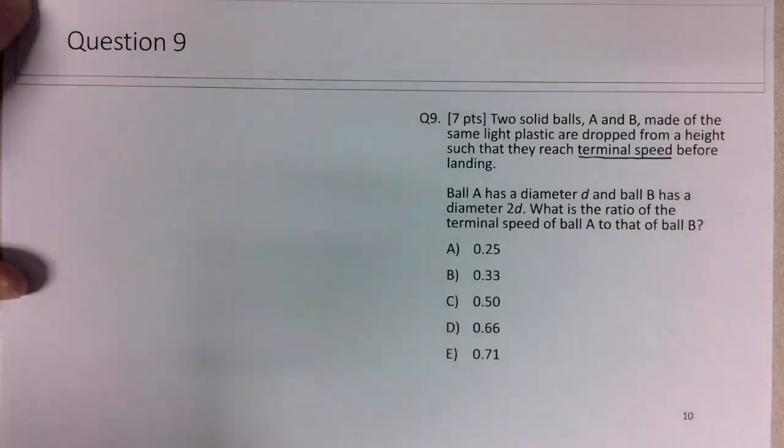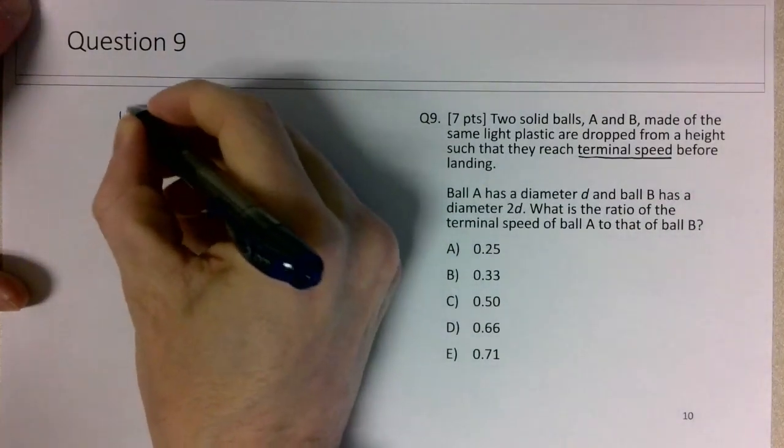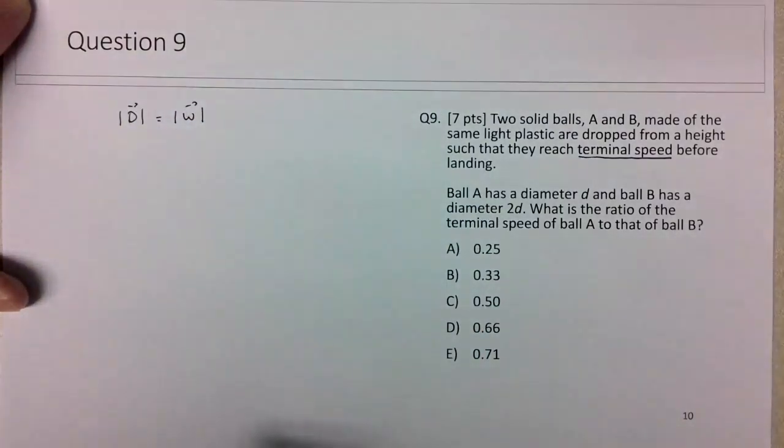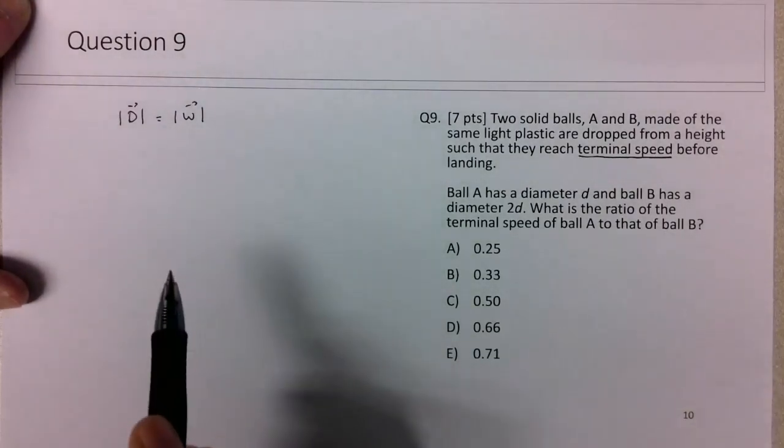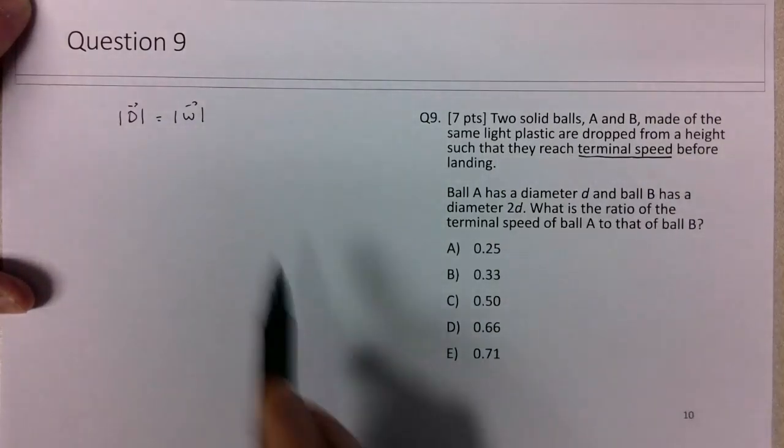At terminal speed, the key concept is that the magnitude of the drag force equals the magnitude of the weight force. That's why the object is no longer accelerating - the upward drag equals the downward weight, so the object in equilibrium moves at constant speed once this occurs.